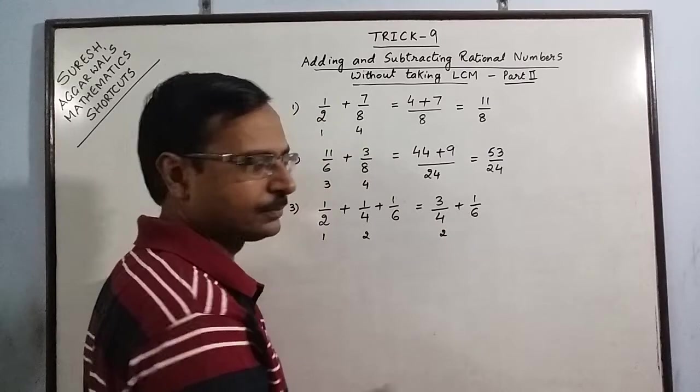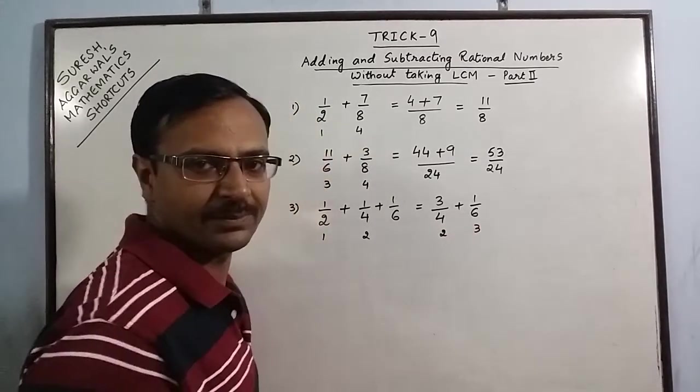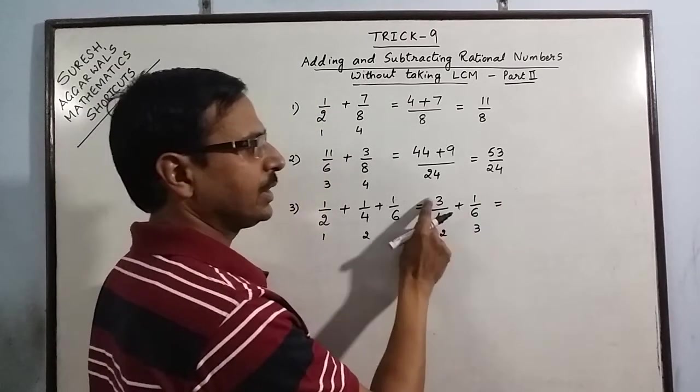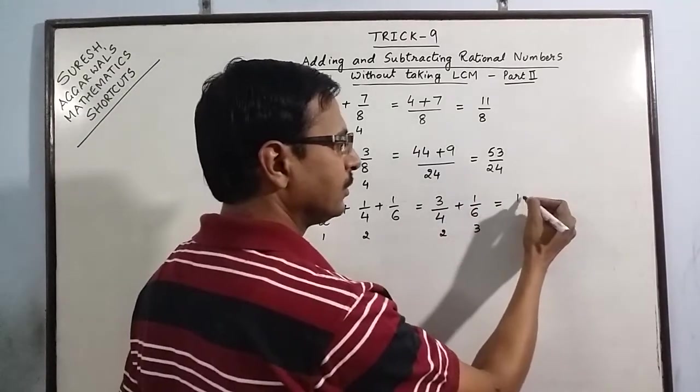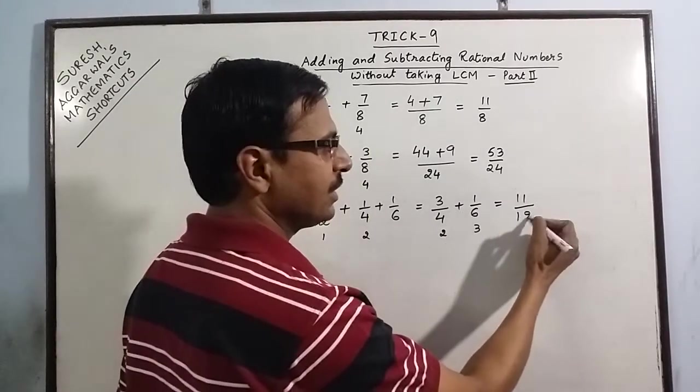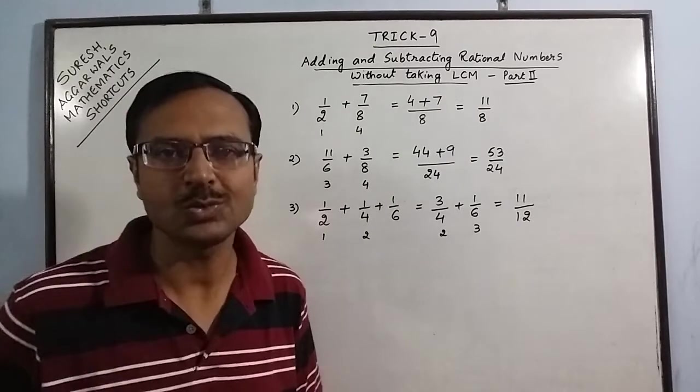Again, 4 and 6 have a common factor of 2. 2, 2 the 4, 2, 3 the 6. 9 plus 2 gives 11 and 4, 3 the 12 or 6, 2 the 12 comes in the denominator. So the answer is 11 upon 12.